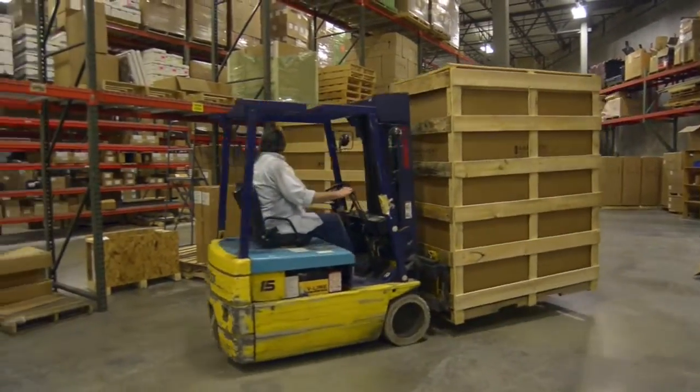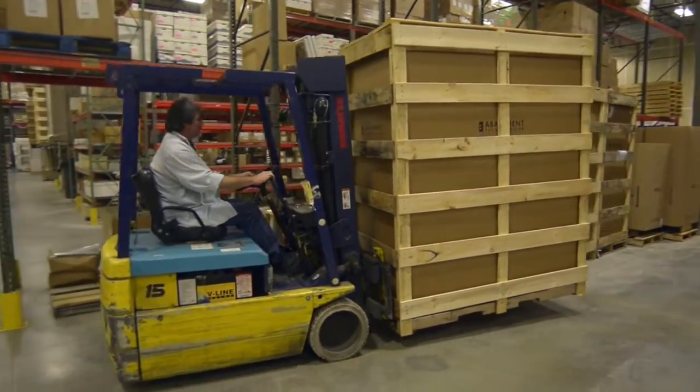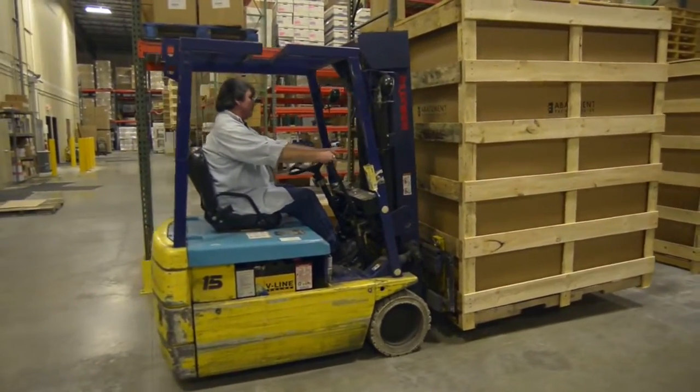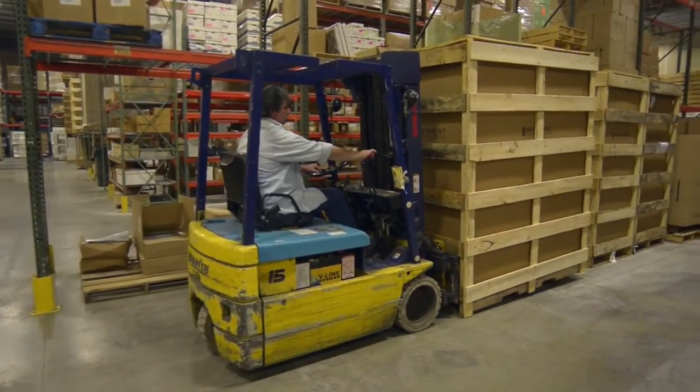When your unit is received, it's going to be crated on a double pallet. A forklift is going to be needed to unload and move the AG8000 before unpacking it.